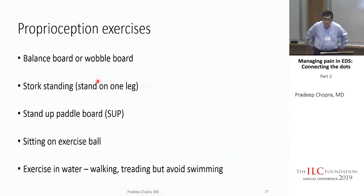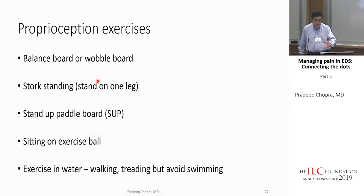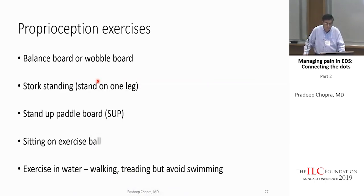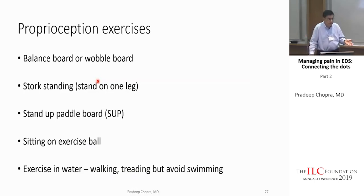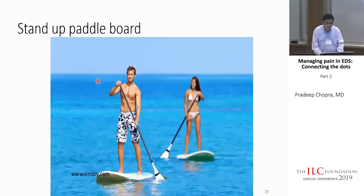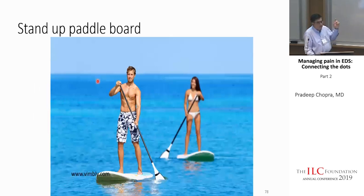Proprioception exercises include: balance board or wobble board, stork standing — standing on one leg with eyes open then closed, stand-up paddleboarding, sitting on an exercise ball, and exercising in water. Exercising in water is key because water puts pressure on your body, helping the brain figure out where the body is at any given time.